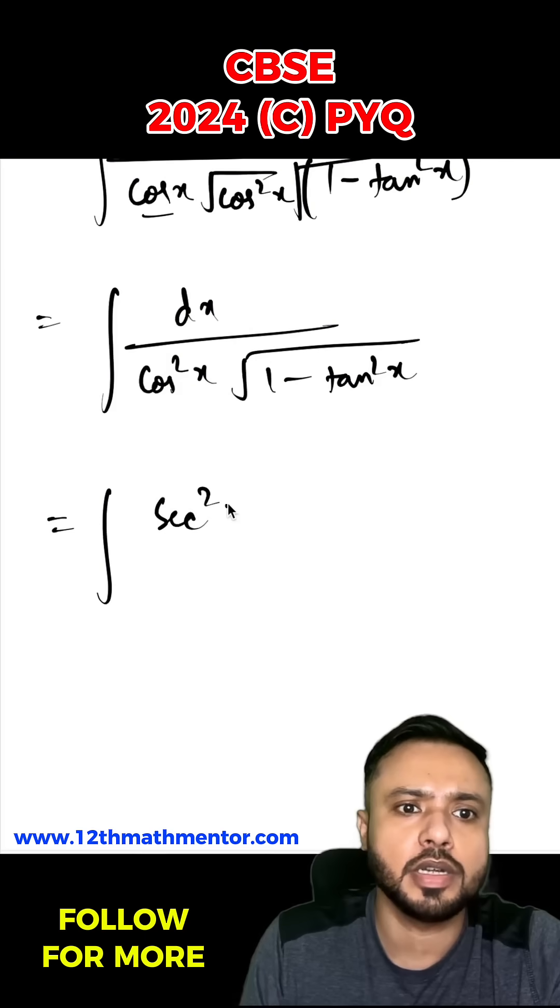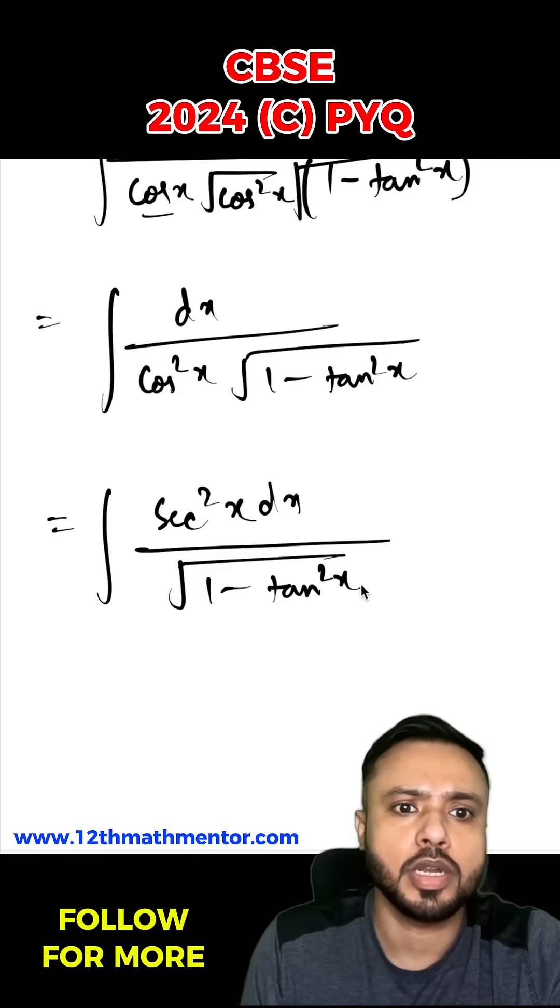1 by cos²x is sec²x. So I can write the integral as sec²x dx upon root of 1 minus tan²x.